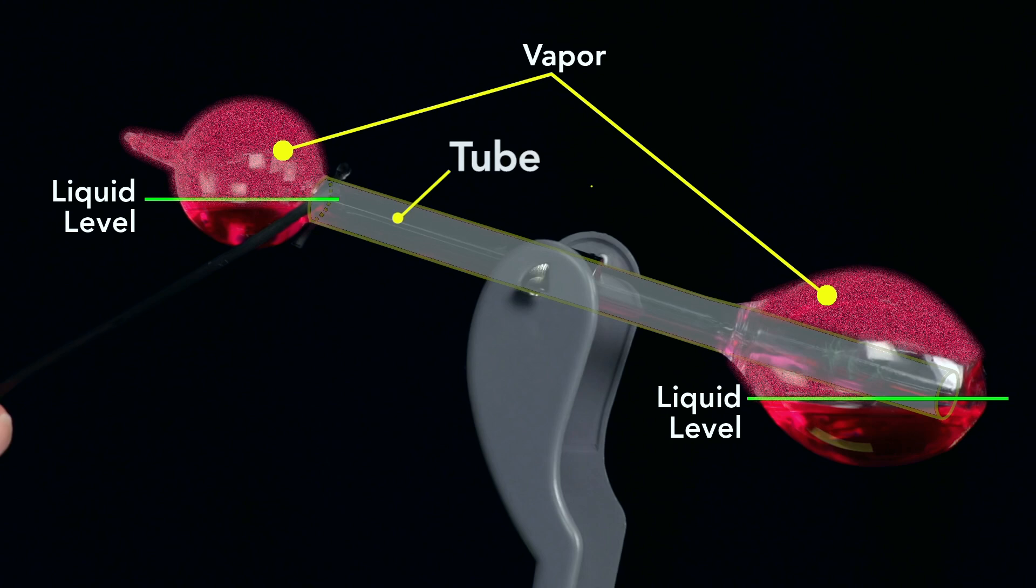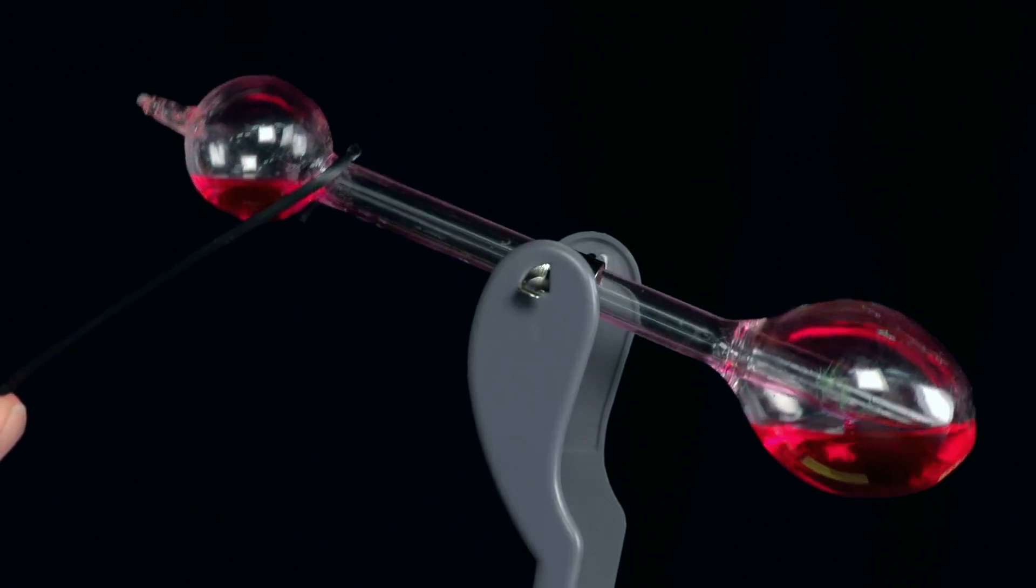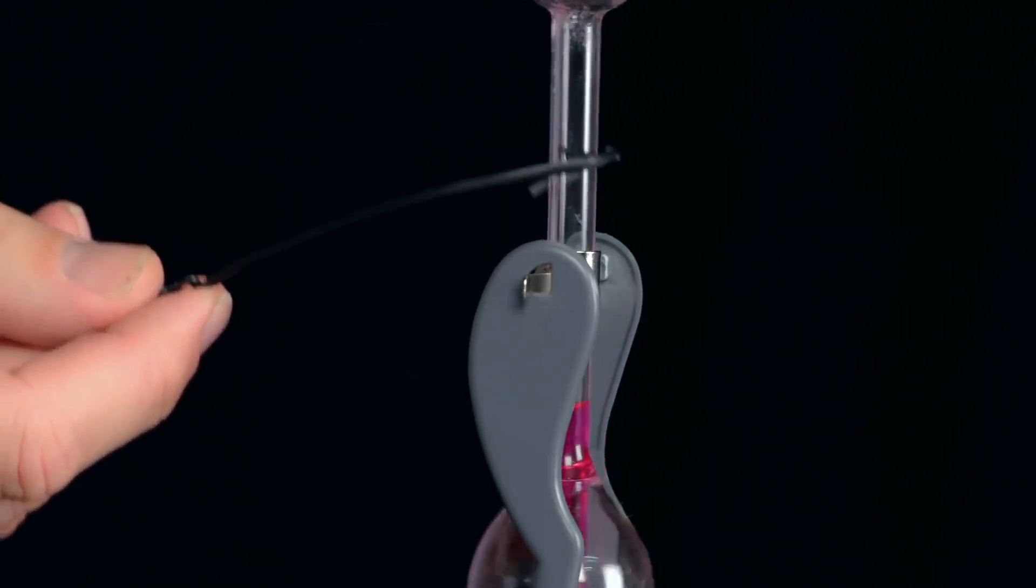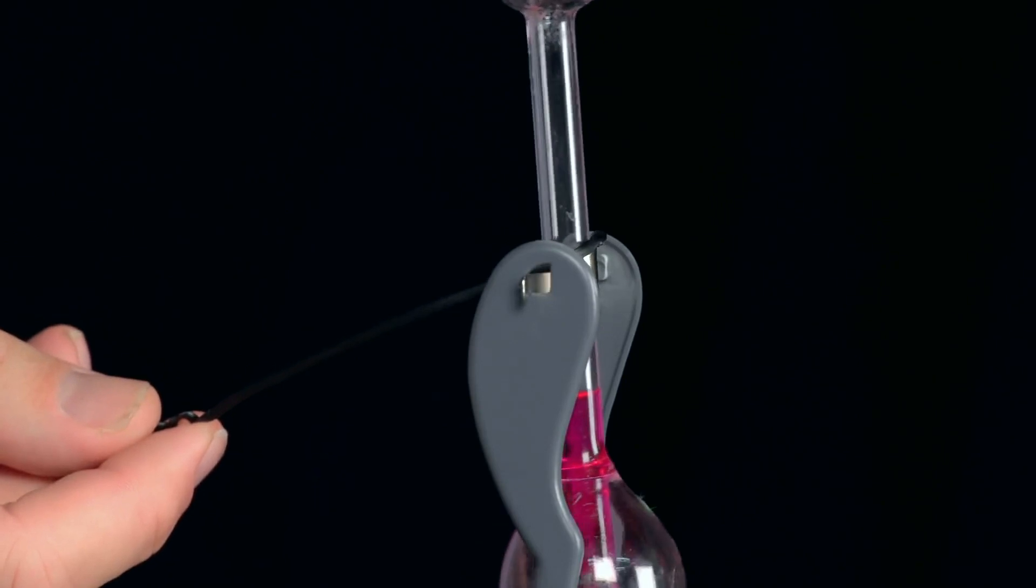This allows the pressure to equalize, and as the bird becomes upright, the liquid returns to the base before the cycle starts again. In operation it doesn't tilt quite this far forward, and so the pressures don't fully equalize.